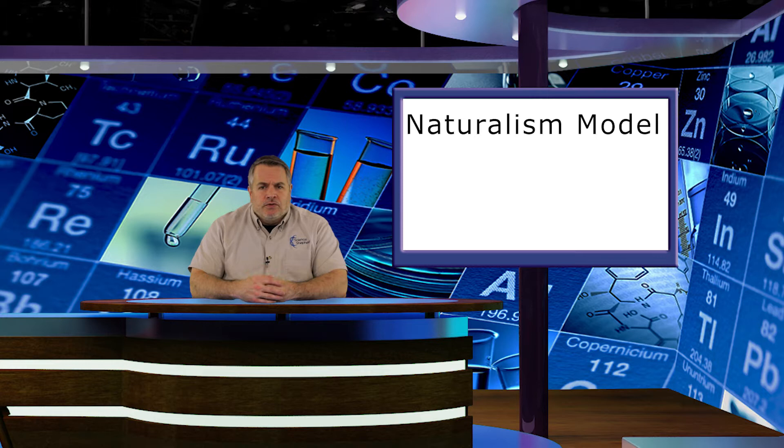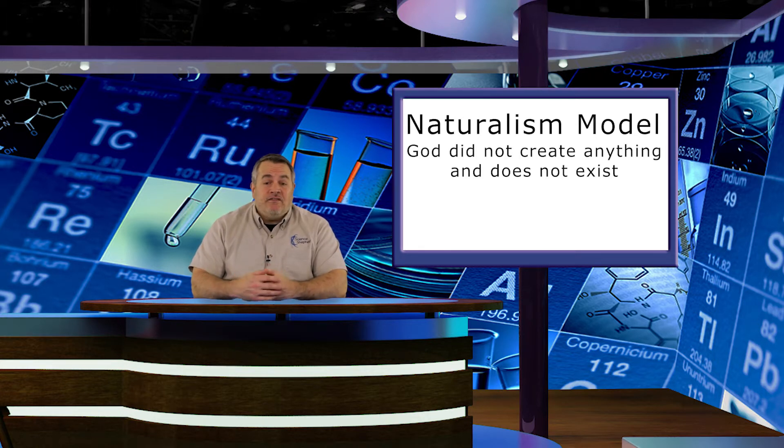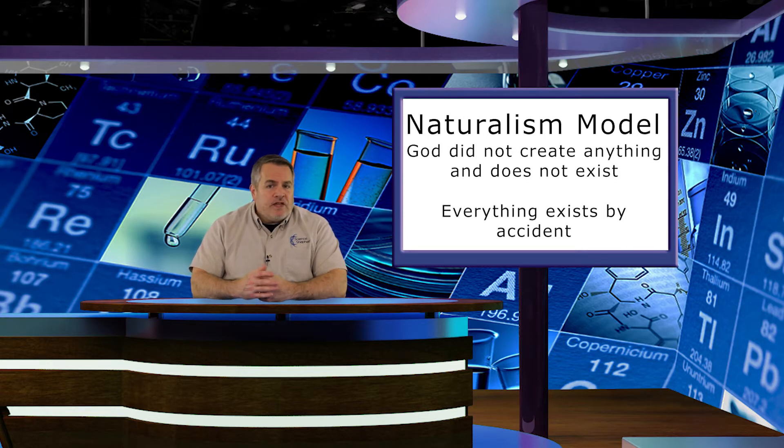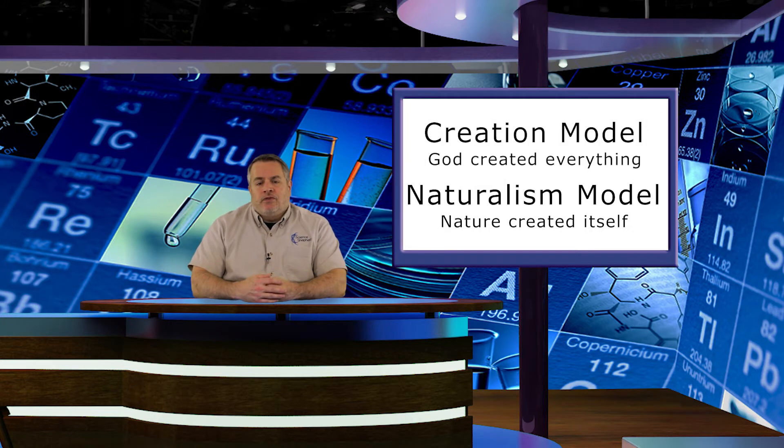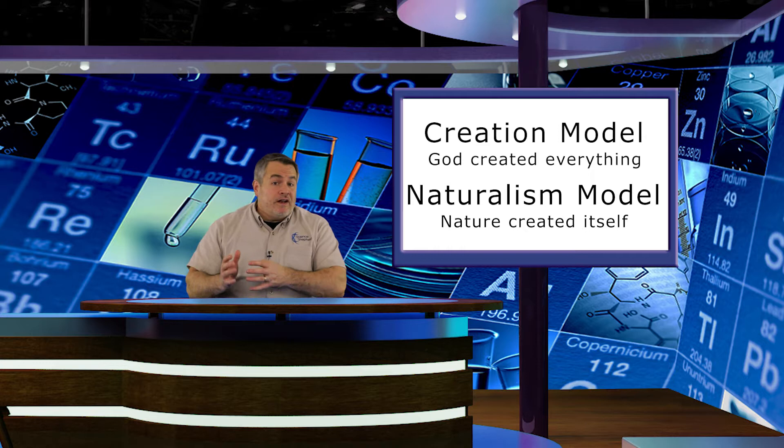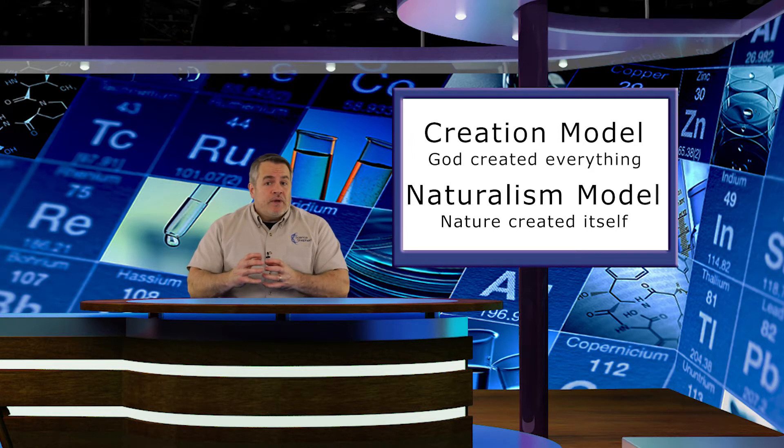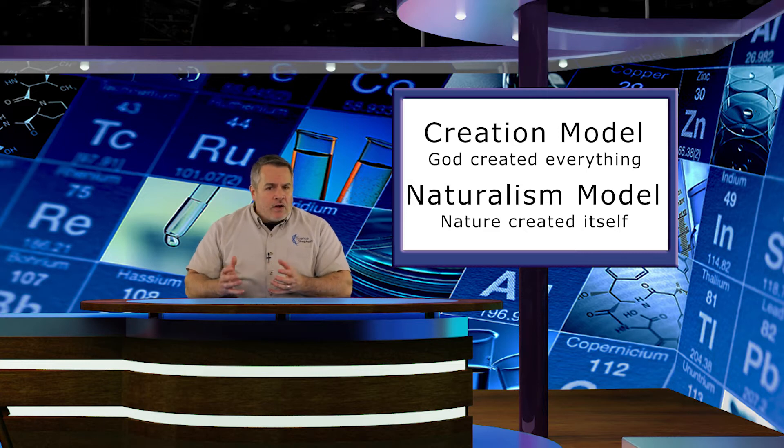And that idea is called naturalism. In the naturalism model of origins, God didn't create anything. In fact, He doesn't even exist in the naturalism model. Naturalism says that everything came to be accidentally, really that the universe created itself. Those two models are very different, aren't they? Either God created everything, or nature just created itself. Now, even though these two models are very different, some scientists do try to make parts of the naturalism model fit into the creation model. But that doesn't really work, because the entire reason that scientists made up the naturalism model was to explain how everything got here without God.